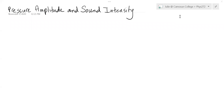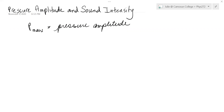This video should help you with problem 16.19 on your Mastering Physics assignment. It has to do with pressure amplitudes, given the symbol P_max — sometimes also called the maximum pressure. The units are pascals. In general, for sound waves that we hear, for normal sounds, it's very small — on the order of 10 to the minus 5 pascals.